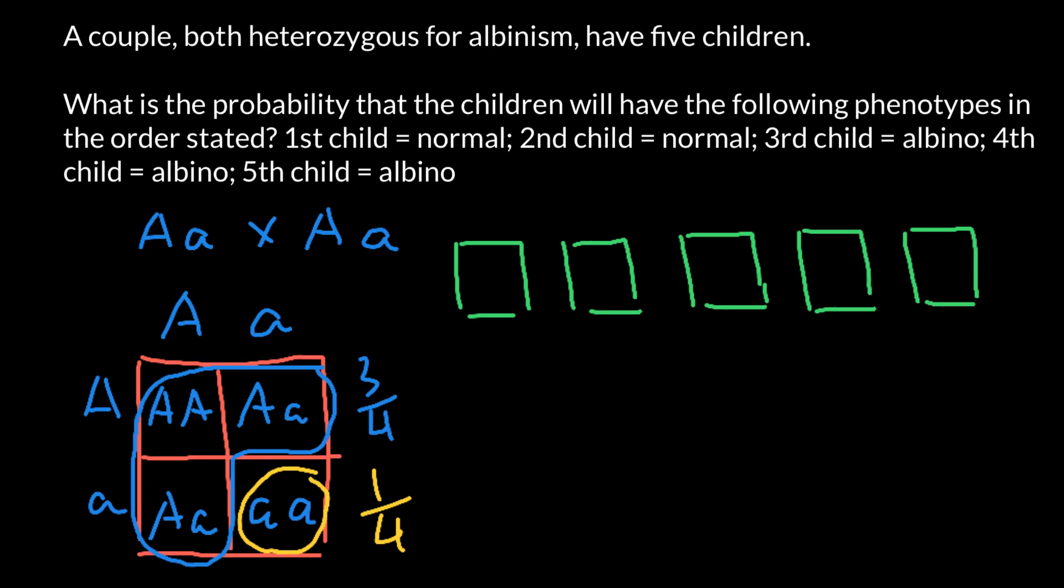So we're told that the first child has to be normal. When this couple has their first child, what is the probability that this child would be phenotypically normal? According to our Punnett square, the probability would be three quarters. So we put three quarters here. Each empty box here represents a child. The second child is also normal, and the probability is three quarters.